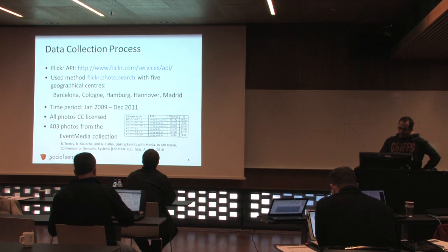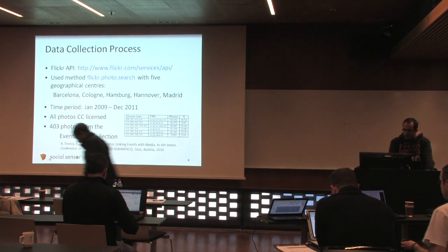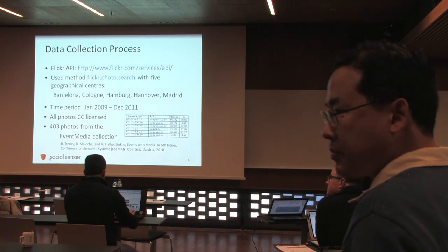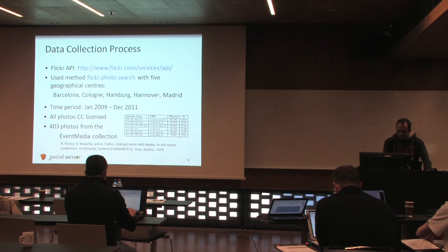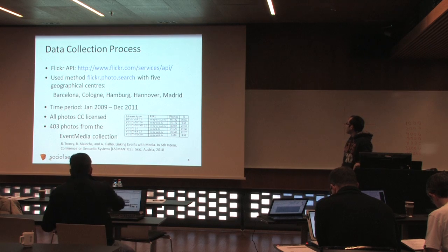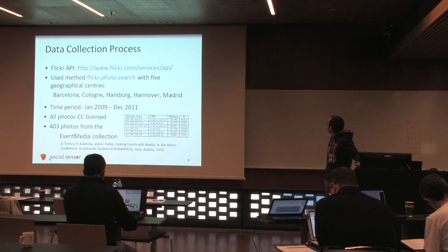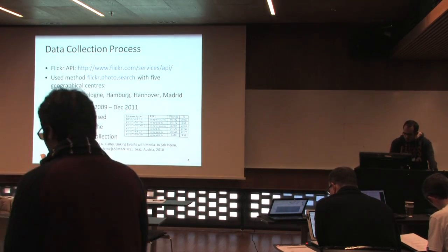The data collection process was designed to meet some criteria which I will explain later. We made use of the Flickr API, the search method of the API, specifying five geographical centers: Barcelona, Cologne, Hamburg, Hanover, and Madrid. The time period of the photos is between the beginning of 2009 and end of 2011, so it covers two years. All photos are CC licensed, and in this table you can see the distribution of the different CC licenses. Most of them are non-commercial use, but there are also quite a lot that enable even commercial use. Also, 403 of the photos came from the event media collection work by Raphael.